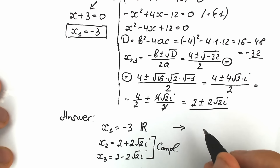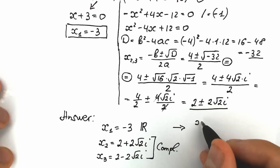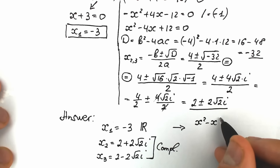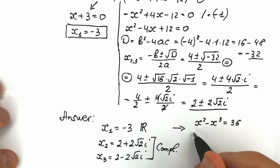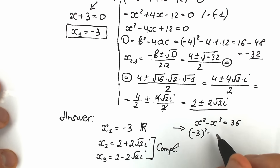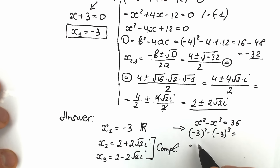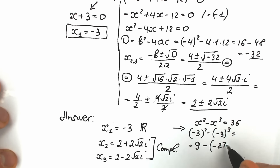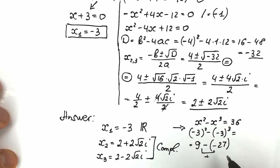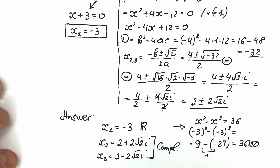Let's check the real root. We had x squared minus x cubed equal to 36. Plugging in x equals minus 3: minus 3 squared minus minus 3 cubed equals 9 minus minus 27. Since this is an odd power, minus 3 cubed equals minus 27, so minus minus 27 gives plus 27. So 9 plus 27 equals 36, which proves our root is absolutely correct.